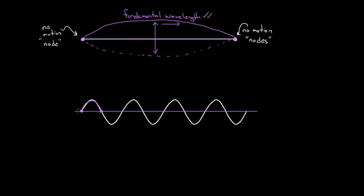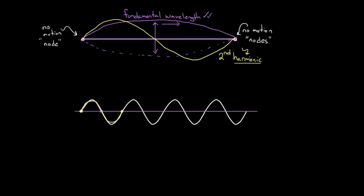The next possibility — the second harmonic — goes from a node, comes up, goes down, then comes back up to meet the node at the other end. It's called the second harmonic because it's the second possibility, and 'harmonic' because these are resonances. The third harmonic comes up, goes down, goes back up, then comes back down. You can keep going and create infinitely many of these. Each time, you pick up another node in the middle: the fundamental has no middle nodes, the second harmonic has one, the third has two, the fourth has three, and so on.